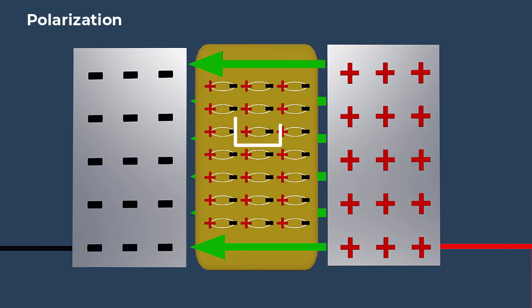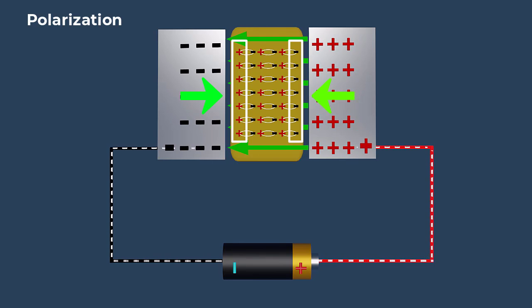A pair of opposite charges separated by some distance is called a dipole. Polarization produces layers of opposite charges on the surface of the dielectric material, that attract more charge onto the plates of the capacitor. This increases the capacitance of the capacitor.